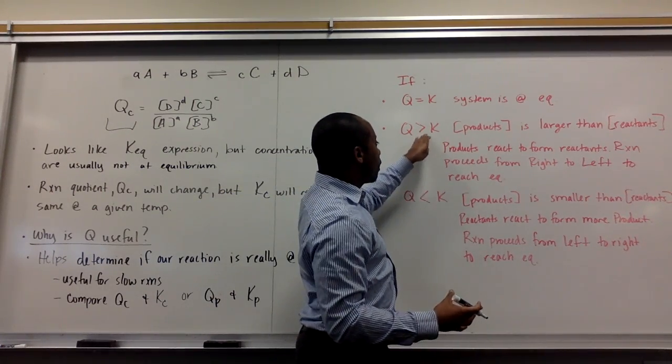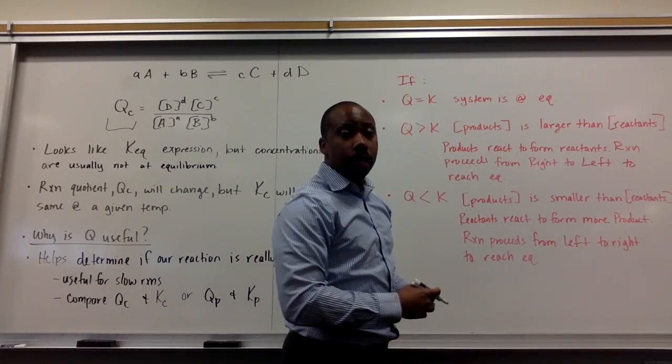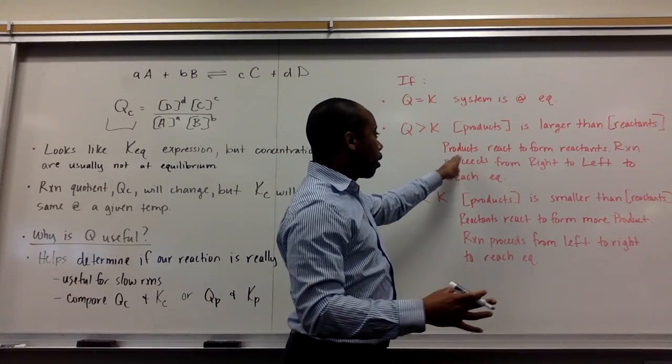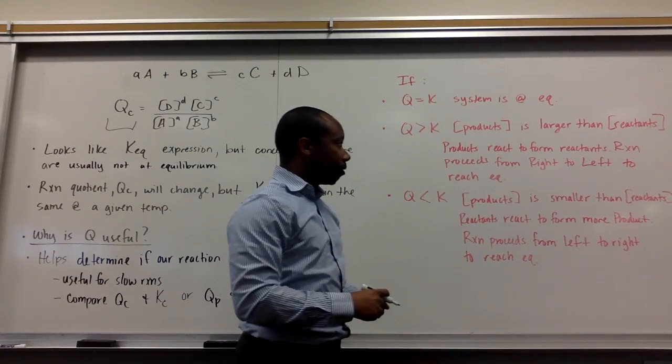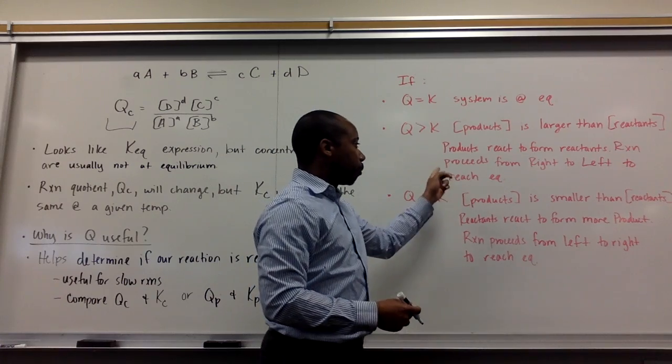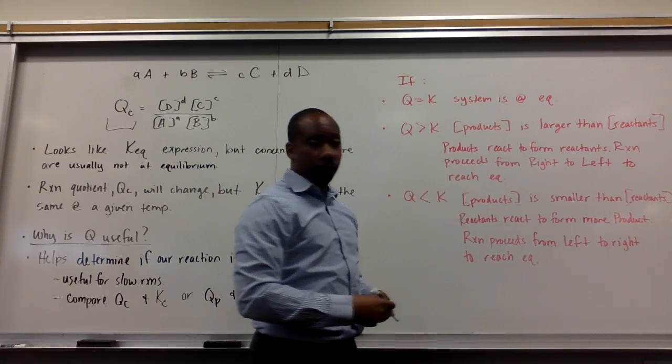If Q is greater than K, that means the concentration of my products is larger than the concentration of my reactants. My products react to form reactants. So, we have the reverse reaction taking place. My reaction proceeds from right to left to reach equilibrium.